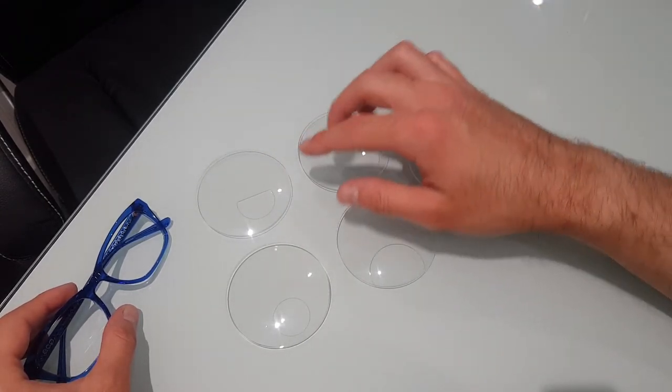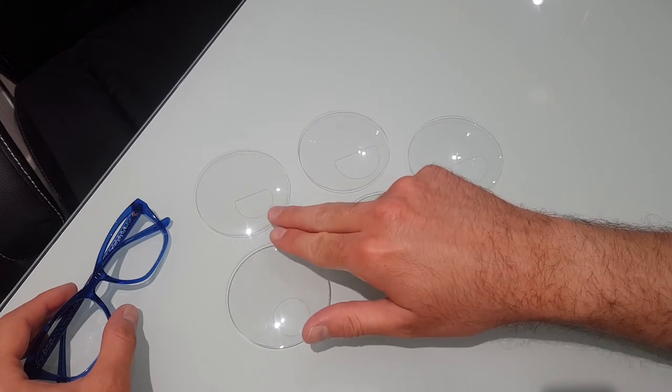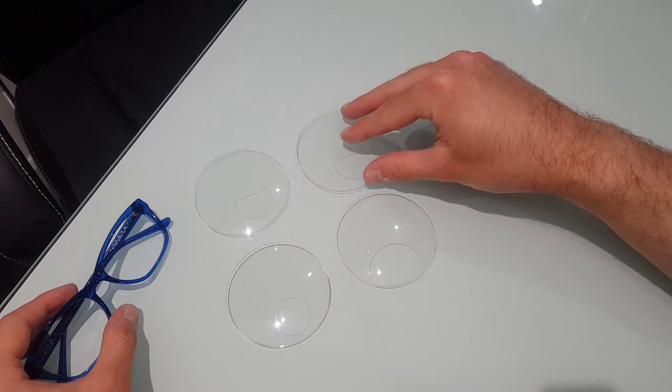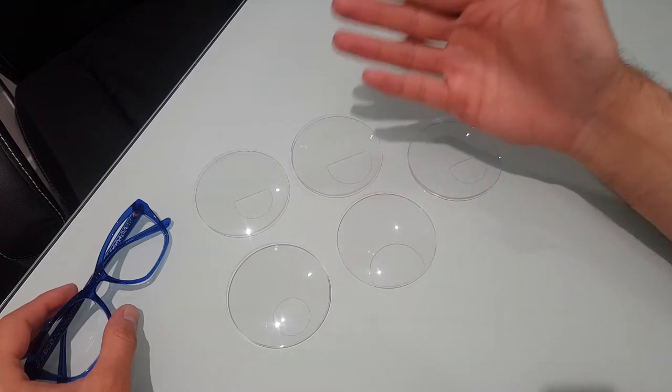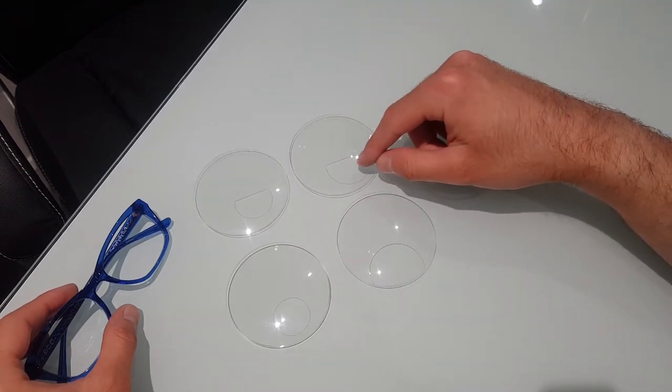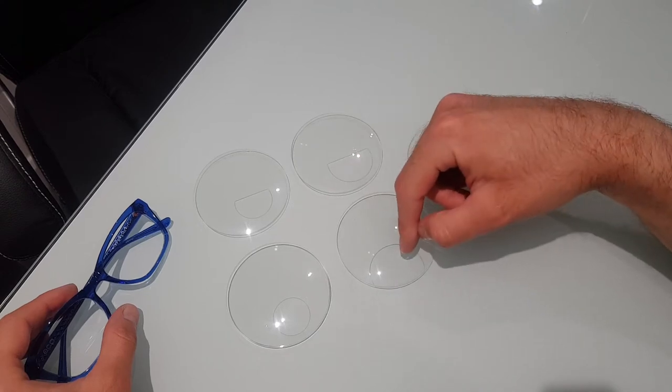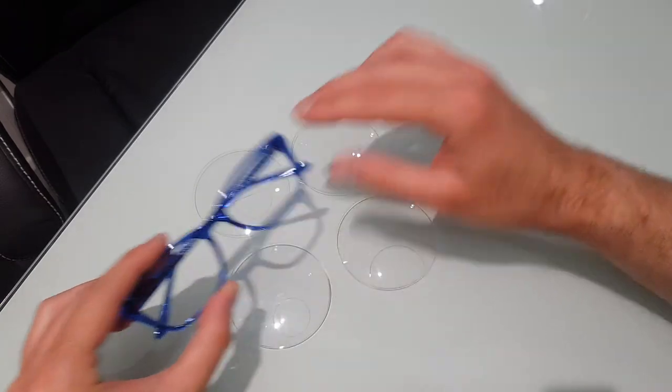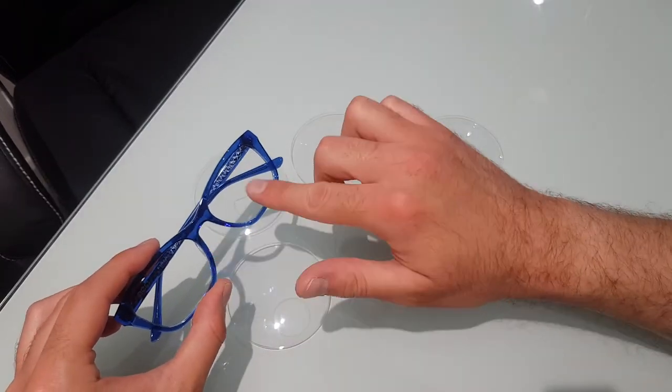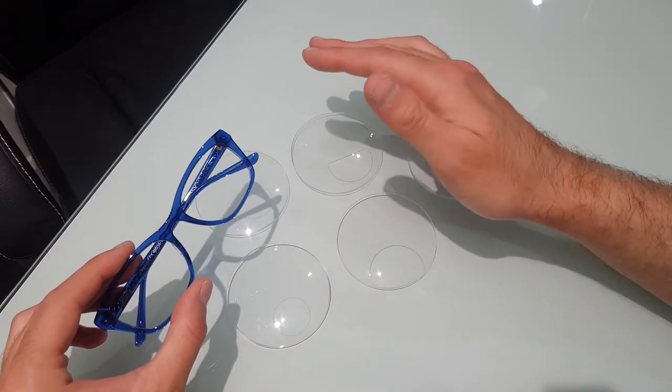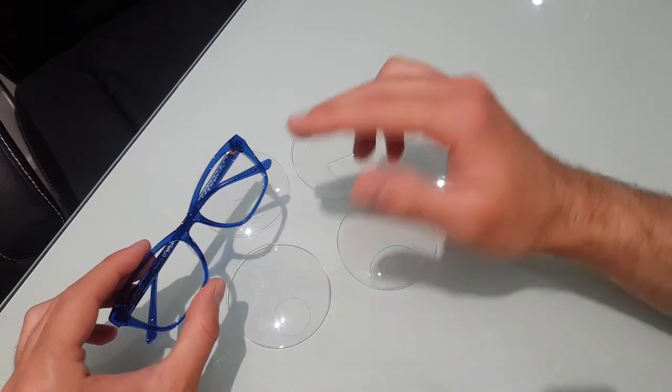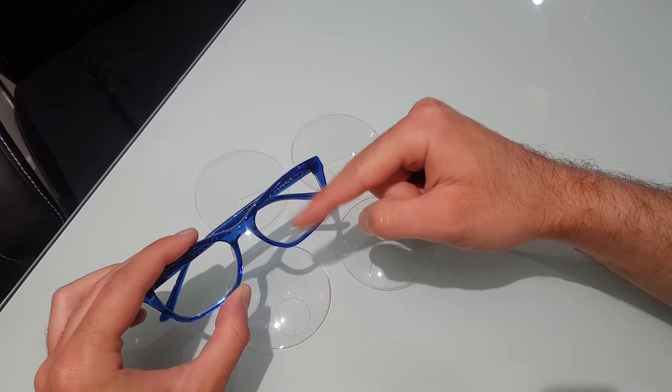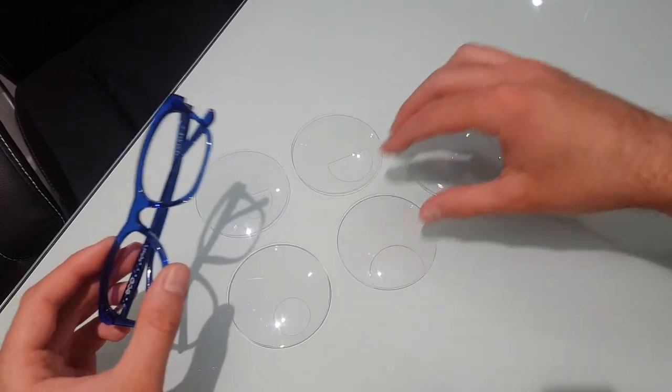One thing to bear in mind is that a lot of people would think, I want a much bigger reading area because I do a lot of reading. Let's go for a D35 or a round 38. They might not necessarily actually give you much more reading. It's all to do with where these lenses sit in your frame, and that is all dependent upon your personal measurements, your pupil distances, how wide apart your eyes are, and whereabouts your eyes sit in the frame vertically as well.